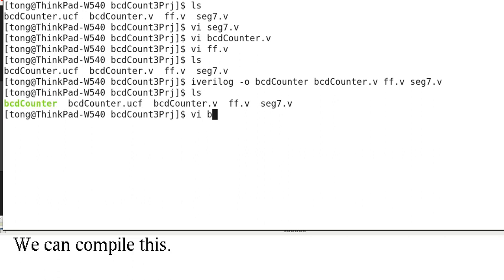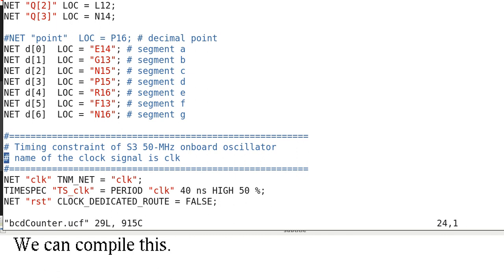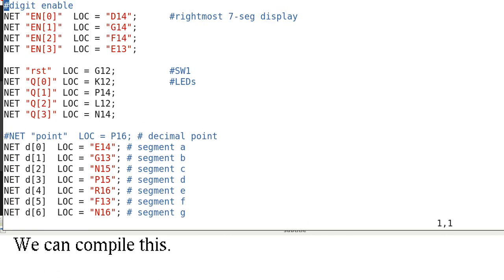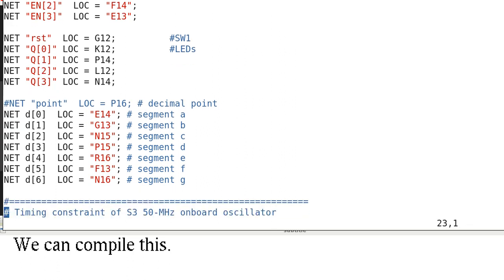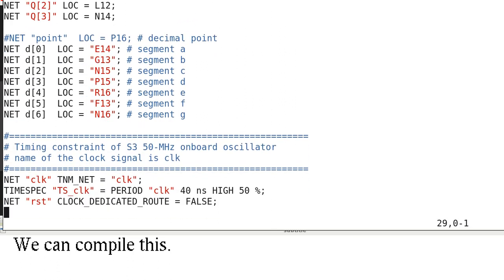And lastly, this is the UCF file. And so these are the enable and the reset. The LEDs, the seven segment LEDs, for the 4 Q outputs. And these are the 7-segment. And this is the clock.